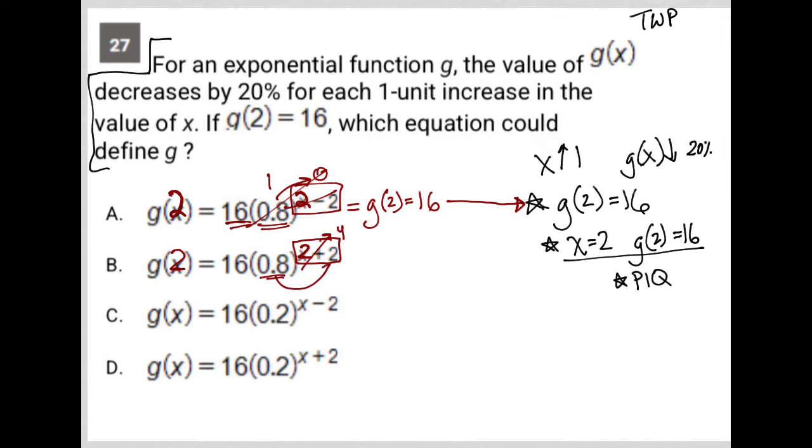0.8 to the fourth power. I'm not going to even figure out what that is because I know 0.8 to the fourth power times 16 will not still equal 16, right? And I still want g(2) to equal 16. So in this case, g(2) does not equal 16. And that's why choice B is gone.